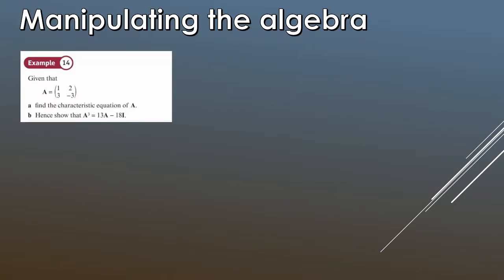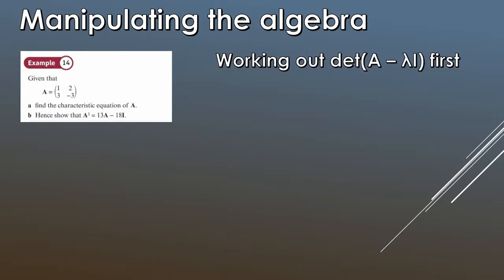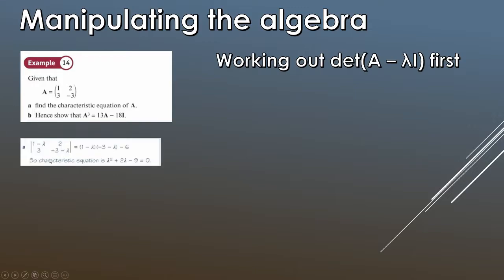Now let's look at another style of question that shows another cool property: algebraic manipulation using the theorem. We have matrix A = [1, 2; 3, −3]. For part one we find the characteristic equation — the determinant of A minus lambda I — which gives (1 − lambda)(−3 − lambda) minus 3 times 2, so minus 6. Setting it equal to zero and expanding yields lambda squared plus 2 lambda minus 9 equals zero.